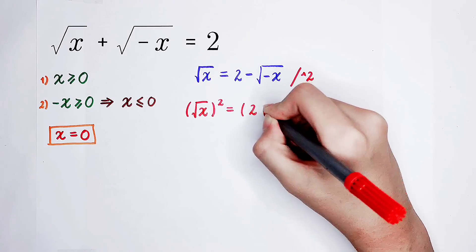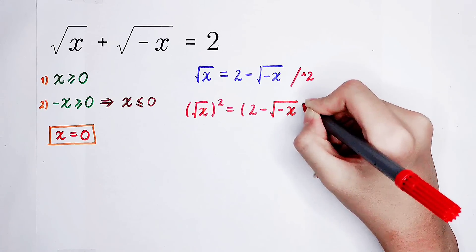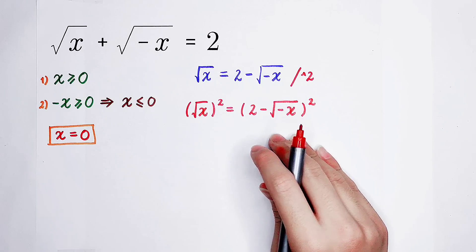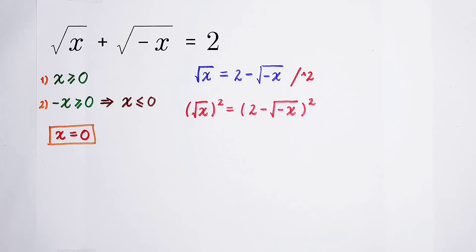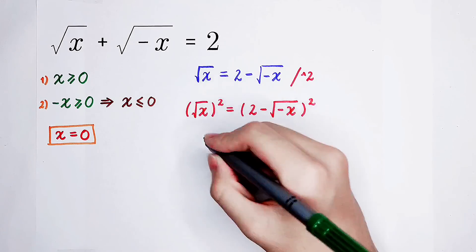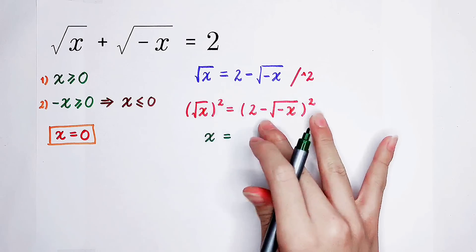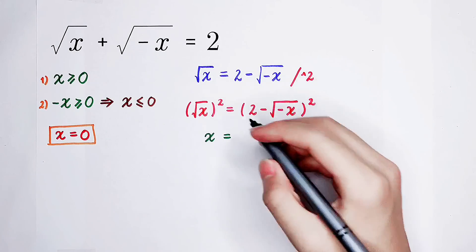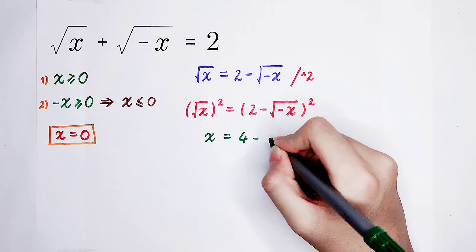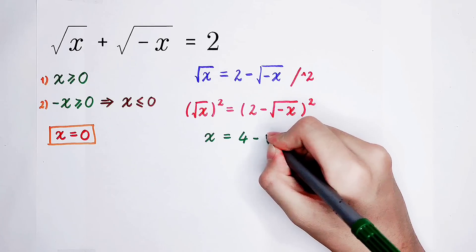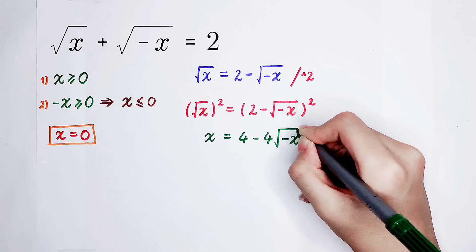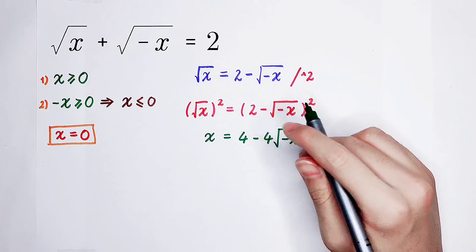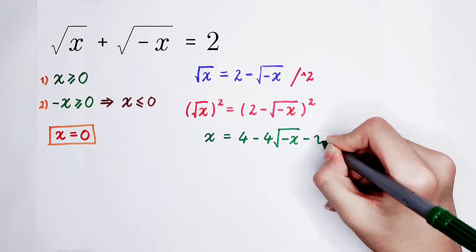On the right-hand side, we have 2 minus the square root of negative x, all squared. We use the formula: (a minus b) squared equals a squared minus 2ab plus b squared — you must memorize this formula. Here a is 2 and b is the square root of negative x. So a squared is 4, minus 2ab is minus 4 times the square root of negative x, and b squared is negative x. So the right-hand side becomes 4 minus 4 times the square root of negative x, minus x.